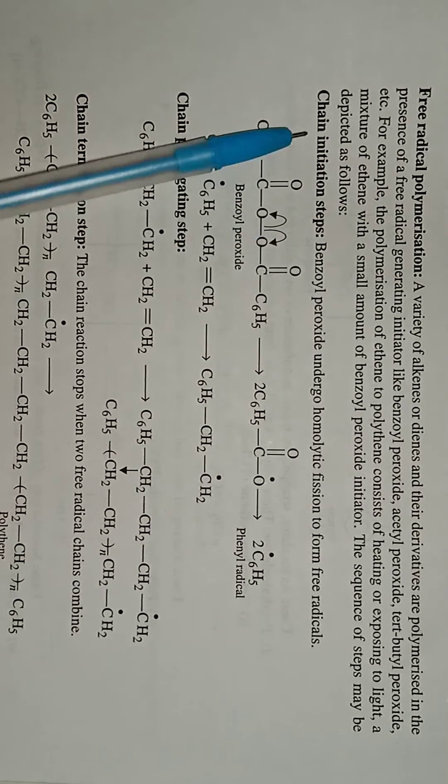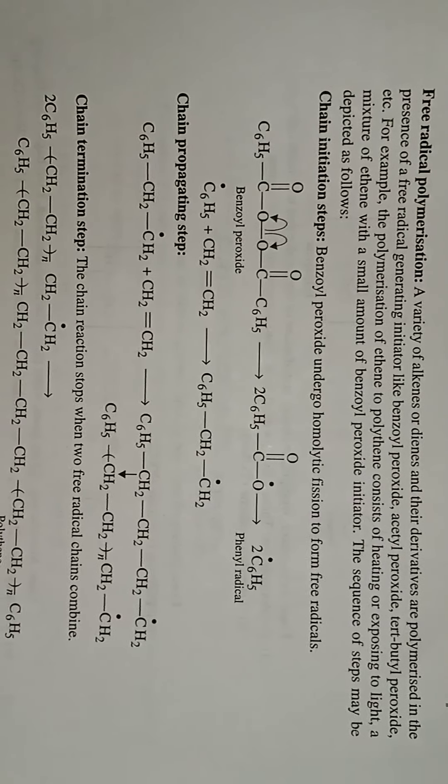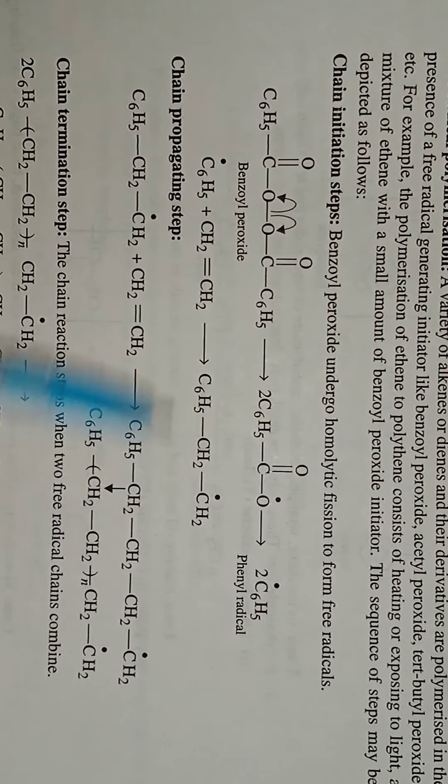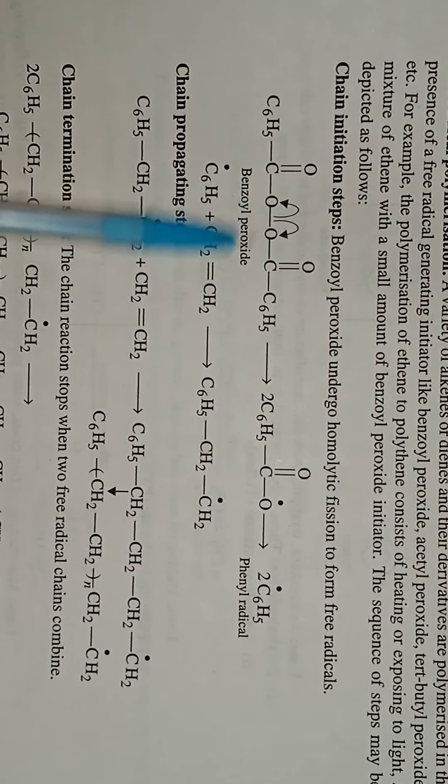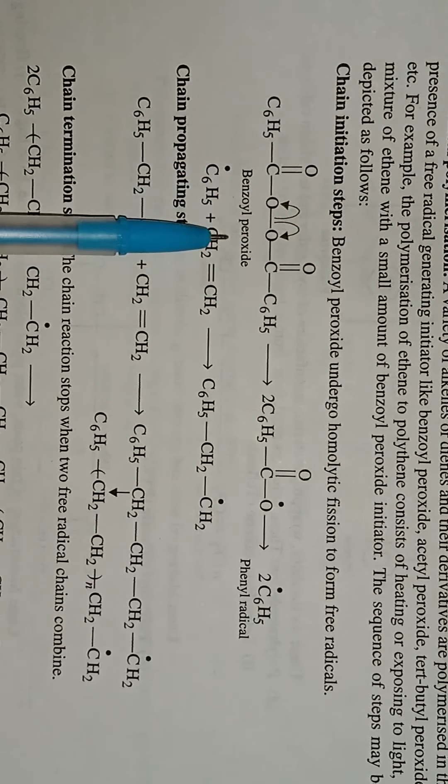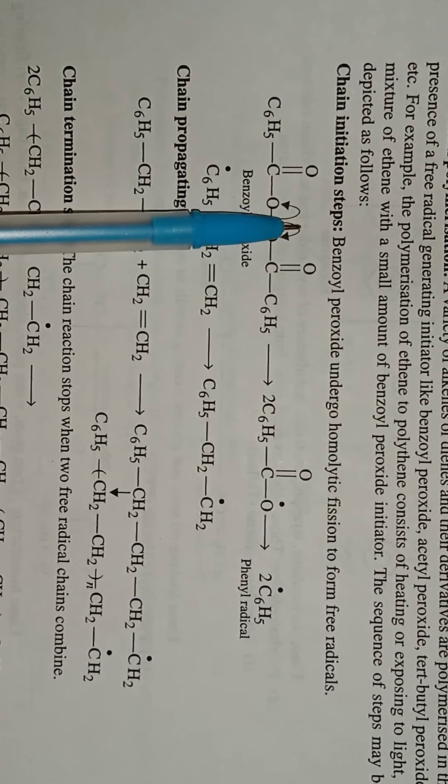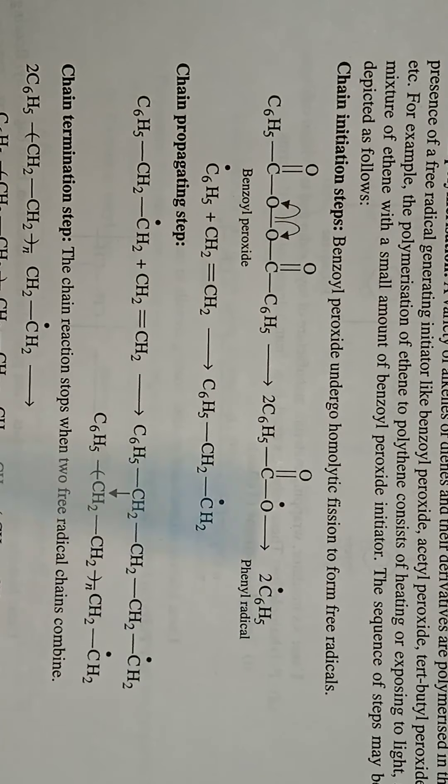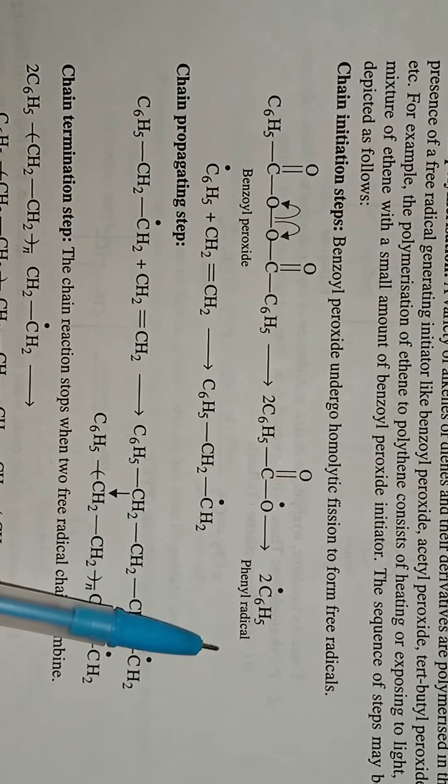First is the chain initiation step. Benzoyl peroxide undergoes homolytic fission and free radicals will form. The benzoyl peroxide forms C6H5COO radicals.